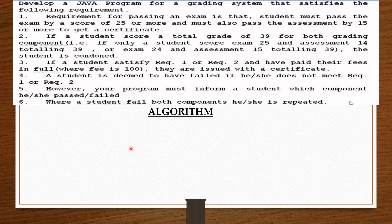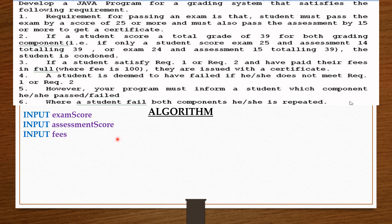For the algorithm, we are going to take score inputs from the user: input exam score, input assessment score, and also ask the user to input the amount of fees paid. To know the total grade, we create a variable called total grade which will store the sum of the exam score and the assessment score, so: total grade equals exam score plus assessment score.